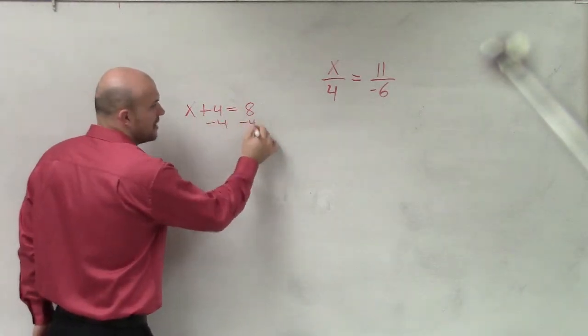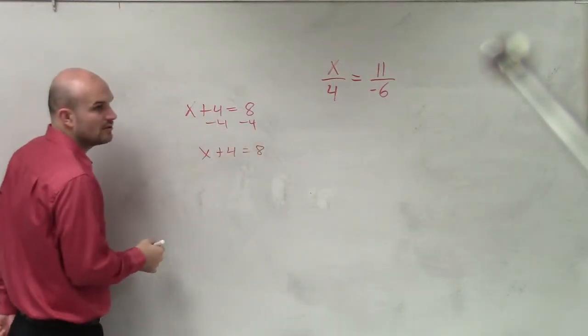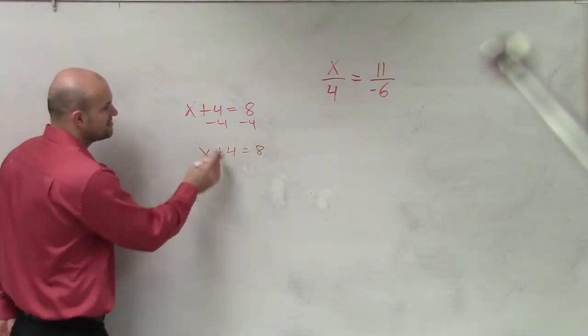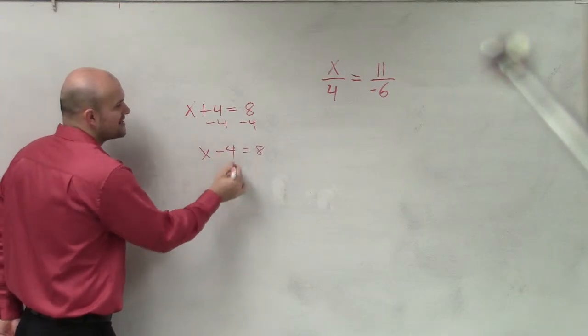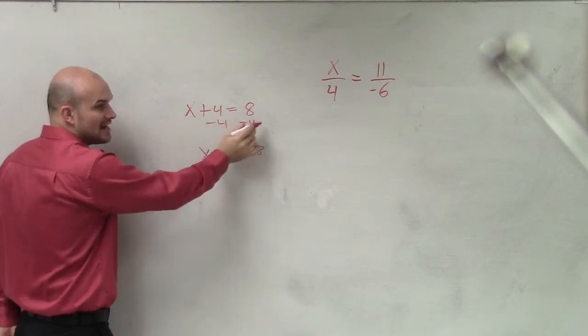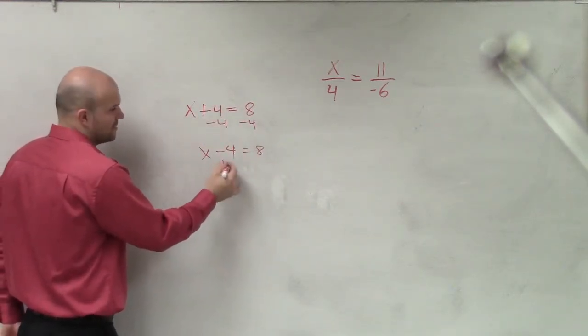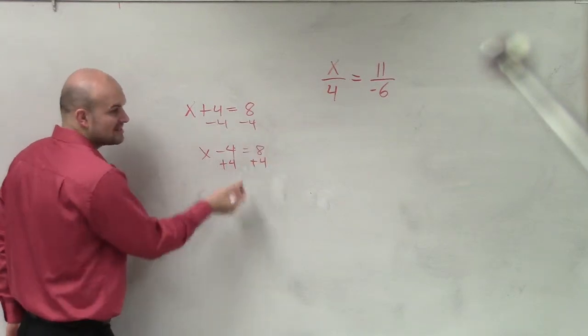You had to subtract 4 on both sides, right? And then if I said x minus 4 equals 8, Sarah, what do I have to do? Here, when it's adding, you subtract it, right? Those are opposites. So if it's subtracting, you had to do what? Add 4, right? You always do the opposite of what's happening to the variable.